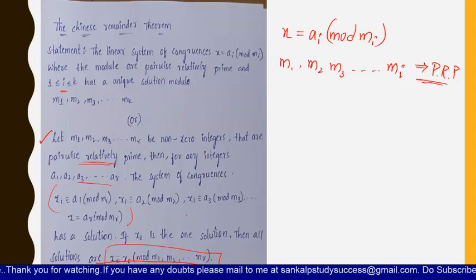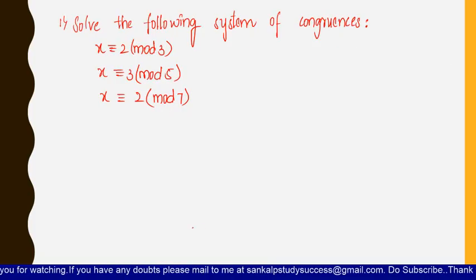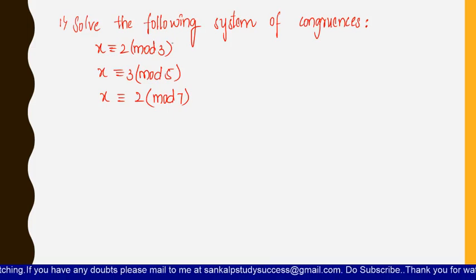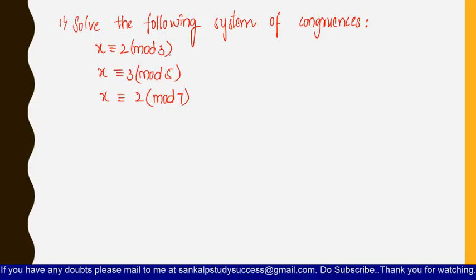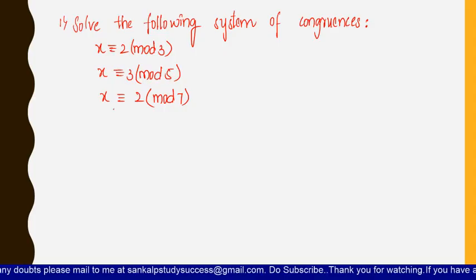Let us solve some problems on the Chinese Remainder Theorem so that you will know exactly what it is and how to solve it. Here is the first problem: the system of congruences x ≡ 2 mod 3, x ≡ 3 mod 5, x ≡ 2 mod 7.